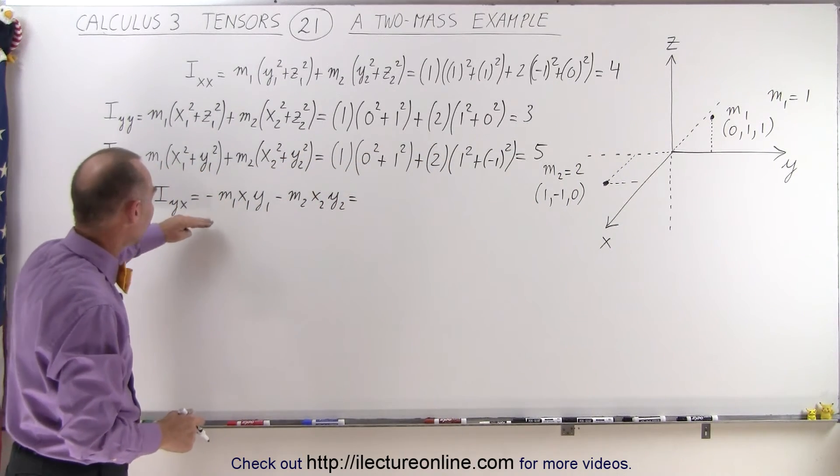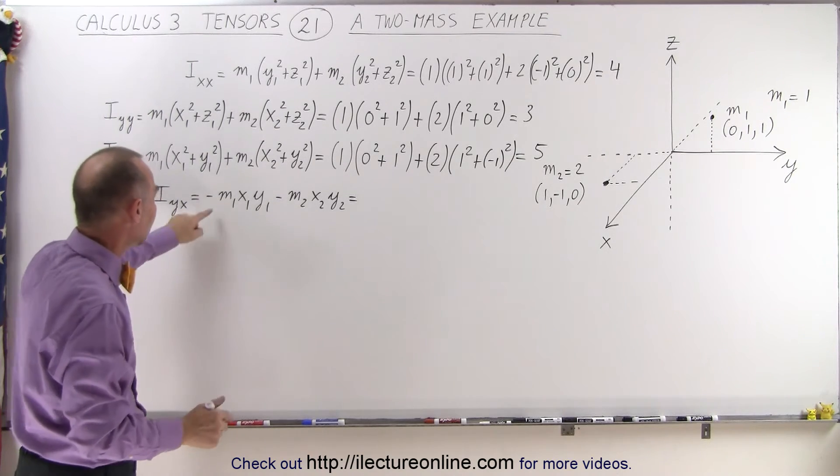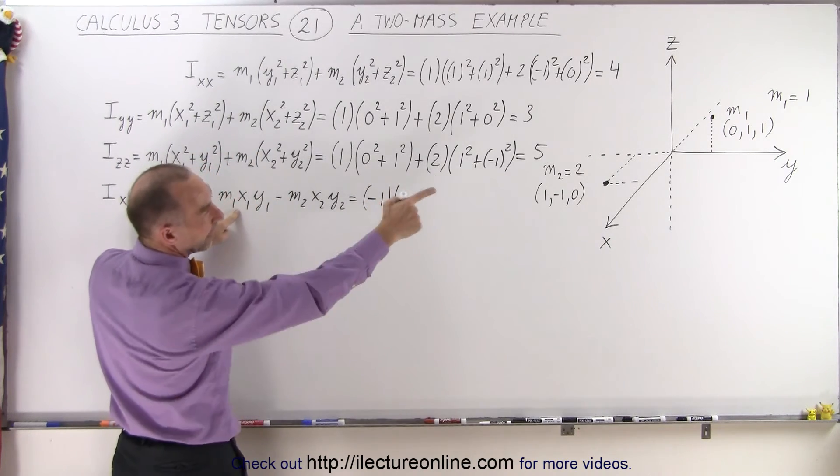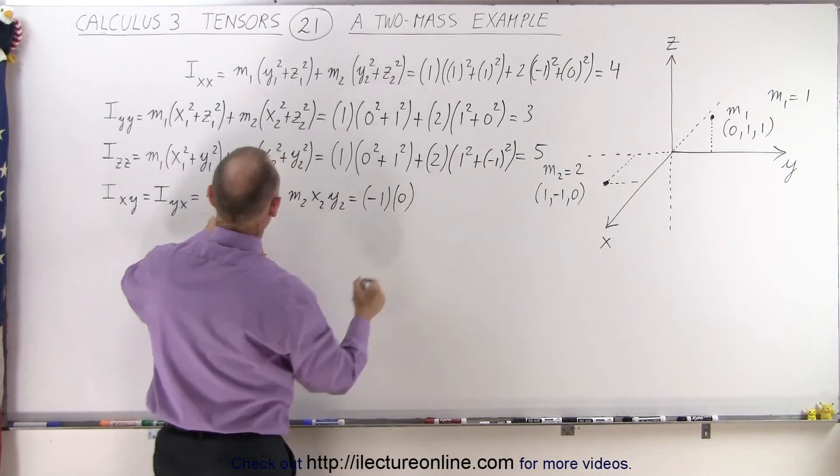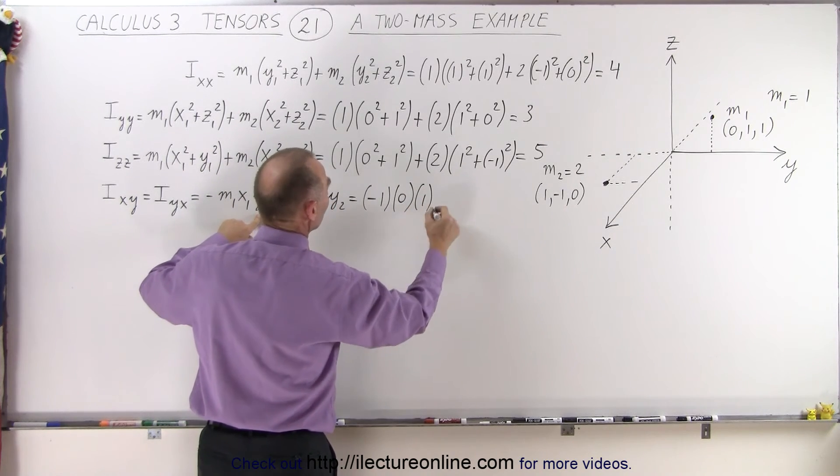Now let's find at least one pair of the off-diagonal elements just to see how it's done. So here we have minus m1 times x1. x1 is 0, and y1 is 1. But since we have that 0 there, this term goes to 0.